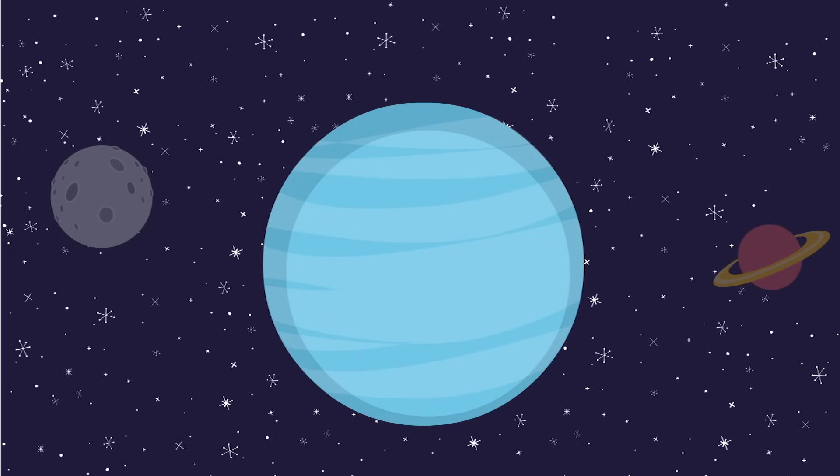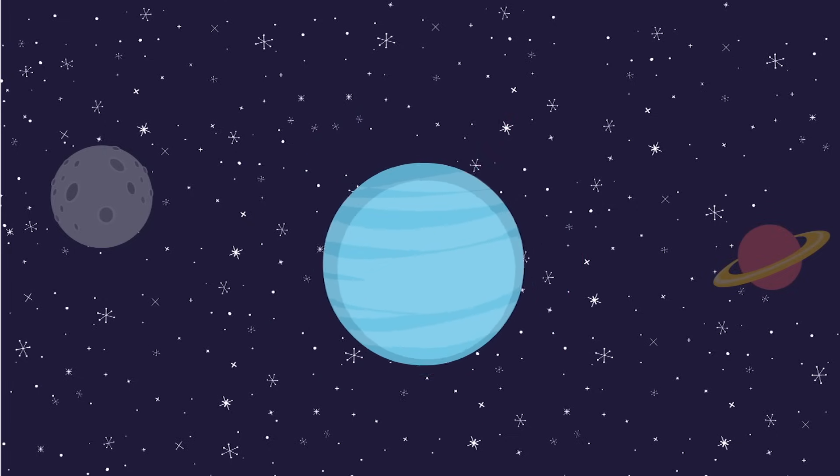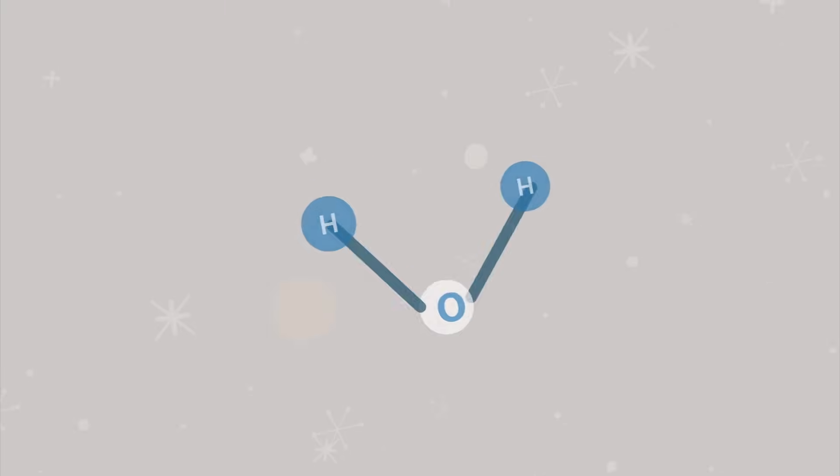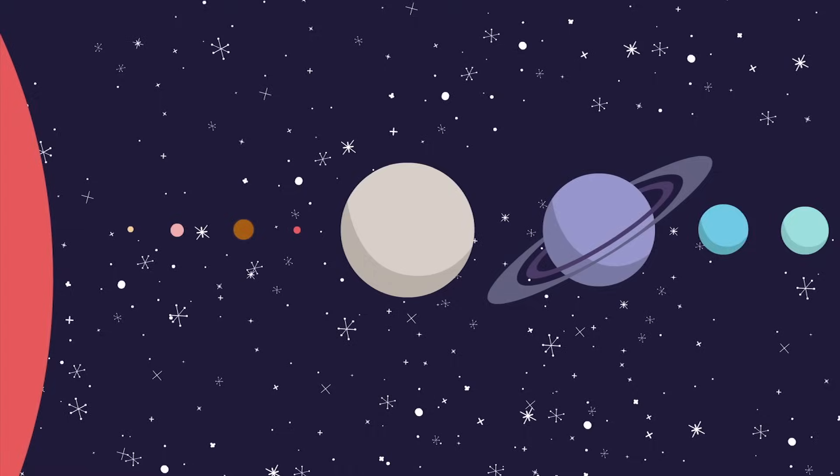When stars eventually collapsed and exploded into supernovas, these new elements were spread across the universe and combined into new compounds, like the now familiar H2O. These water molecules were present in the dusty cloud that formed our solar system, and more collided with our planet after its formation.